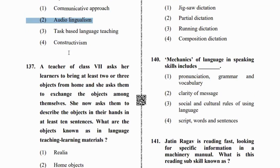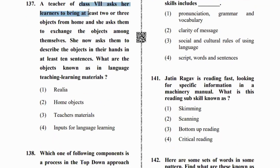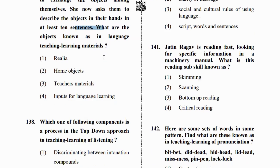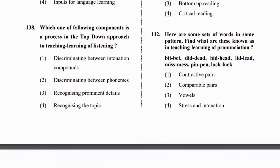The next question: a teacher asks learners to bring two or three objects from home, then exchange those objects and ask what you have exchanged with your friends. These home objects are called realia — real-life objects used as teaching material or input.